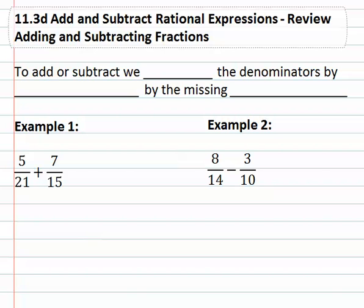When we're adding and subtracting fractions, we know we need to build up the denominators by multiplying by the missing factors to get that least common denominator.